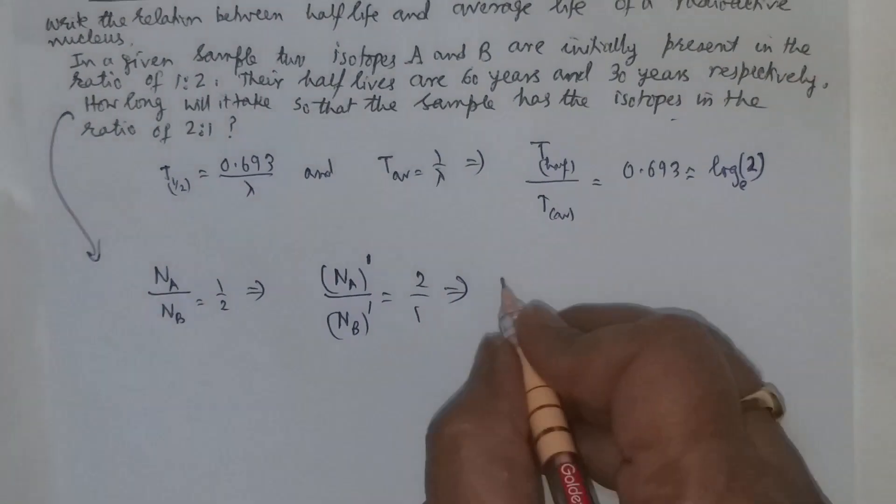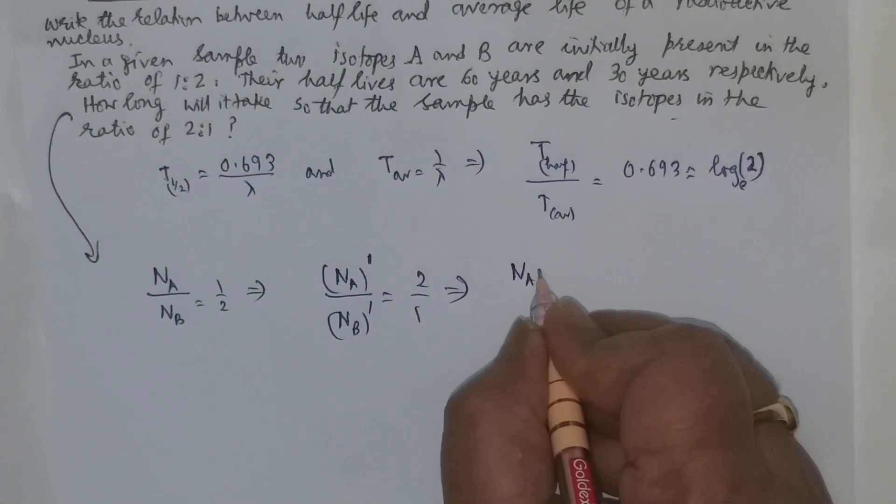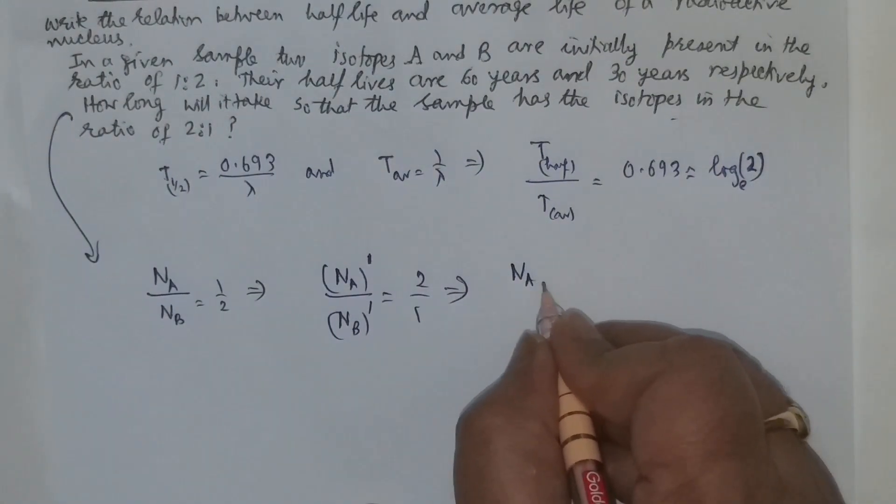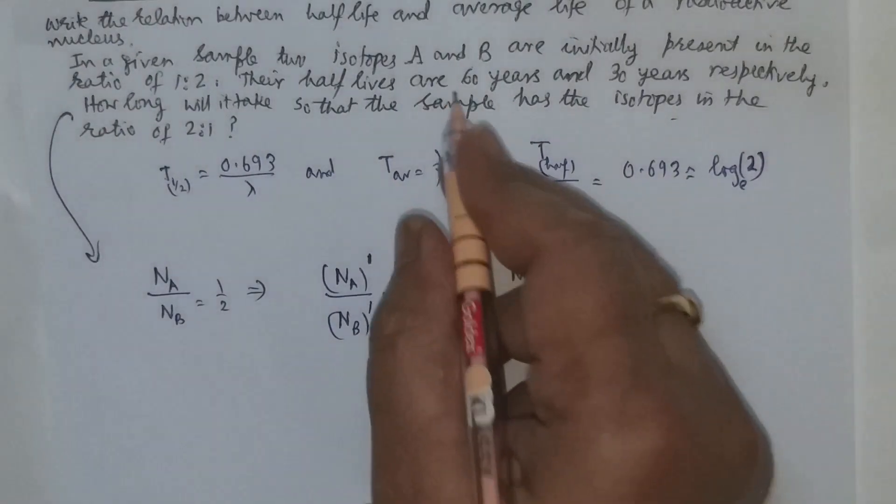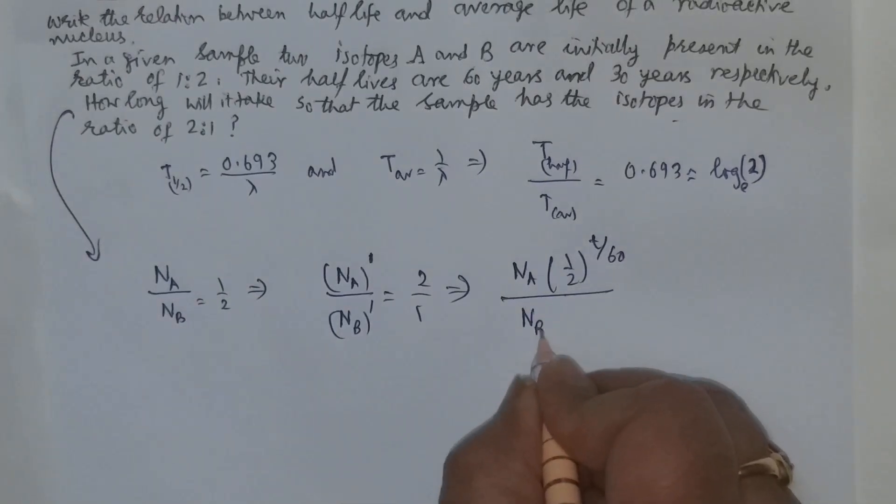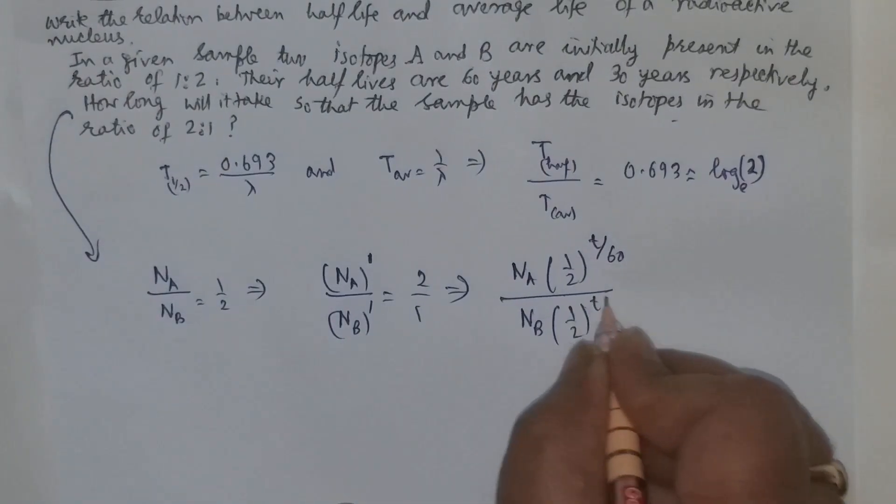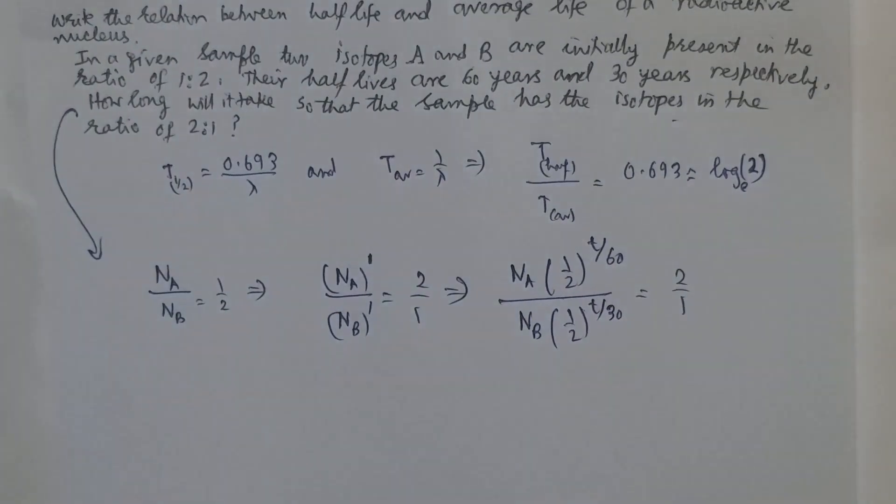What is n a dash and n b dash? n a dash will be equal to n a into half to the power t by its half life which is given as 60 years. And n b dash is initial n b into half to the power t by its half life which is equal to 30. This ratio is 2 by 1.